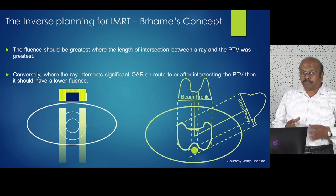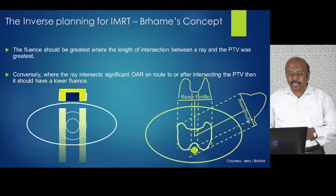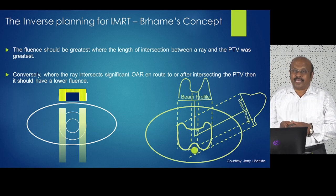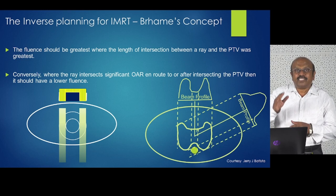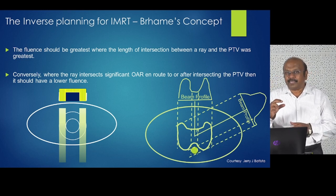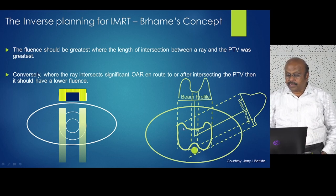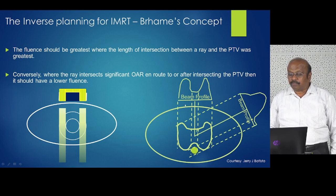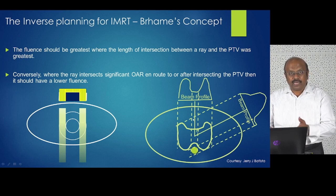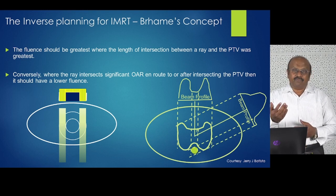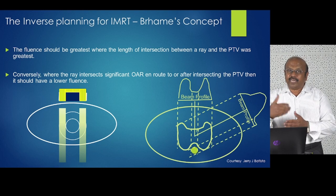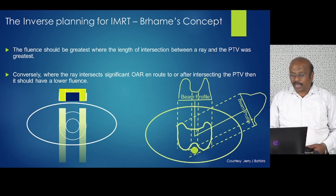The concept of Brahme's theorem is: wherever you have a larger path length in the PTV, the fluence has to be higher. Wherever it passes through a smaller path length in the PTV or through a critical organ, the fluence has to be minimum. As you can see here, where the path length is more, the fluence is more; where the path length is less and there is a critical organ, the fluence is less.